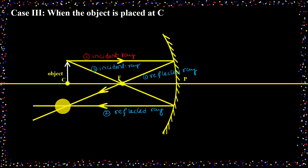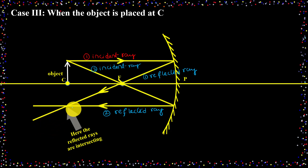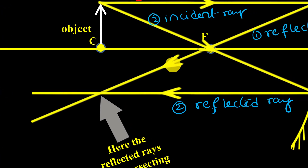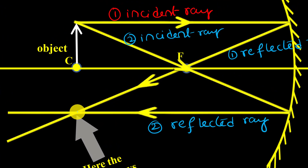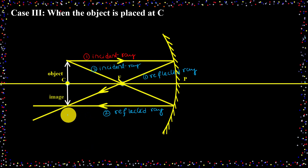Now I need to identify the position of the image. We already discussed that the rule is: where the two reflected rays intersect, the image will form. In this diagram, the two reflected rays are intersecting at this position — here the two reflected rays intersect, so the image will form at the point of intersection. I got the image.